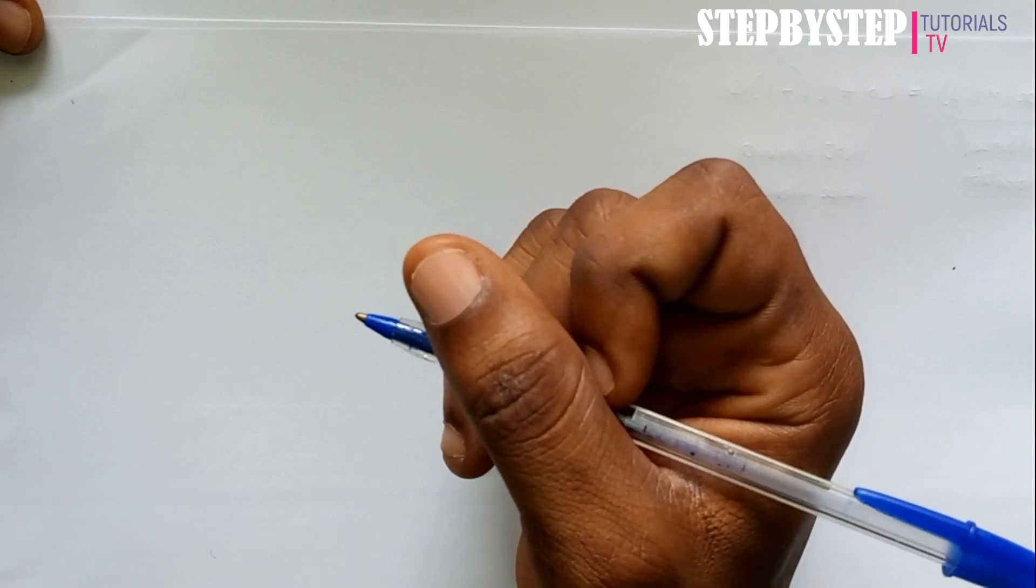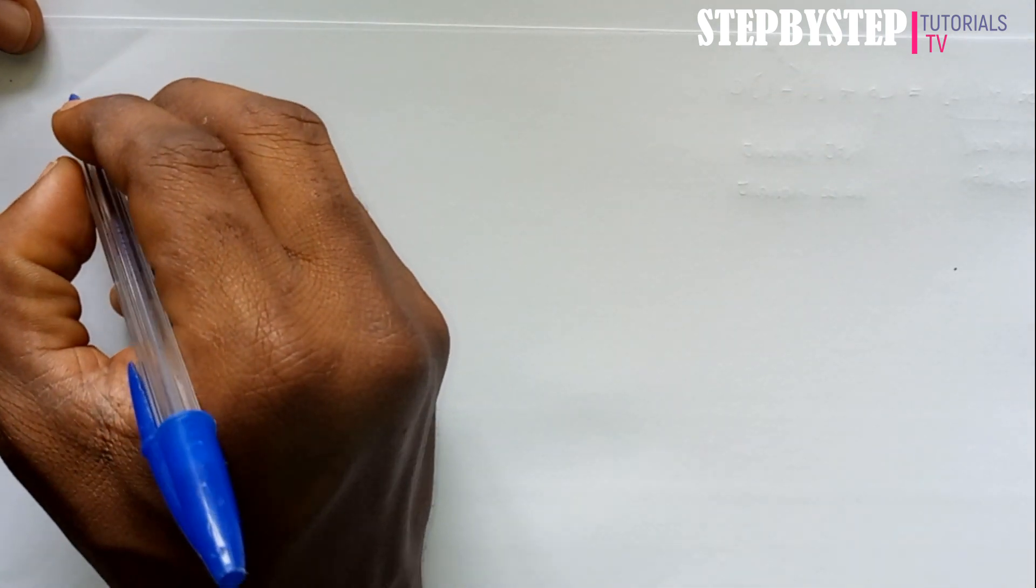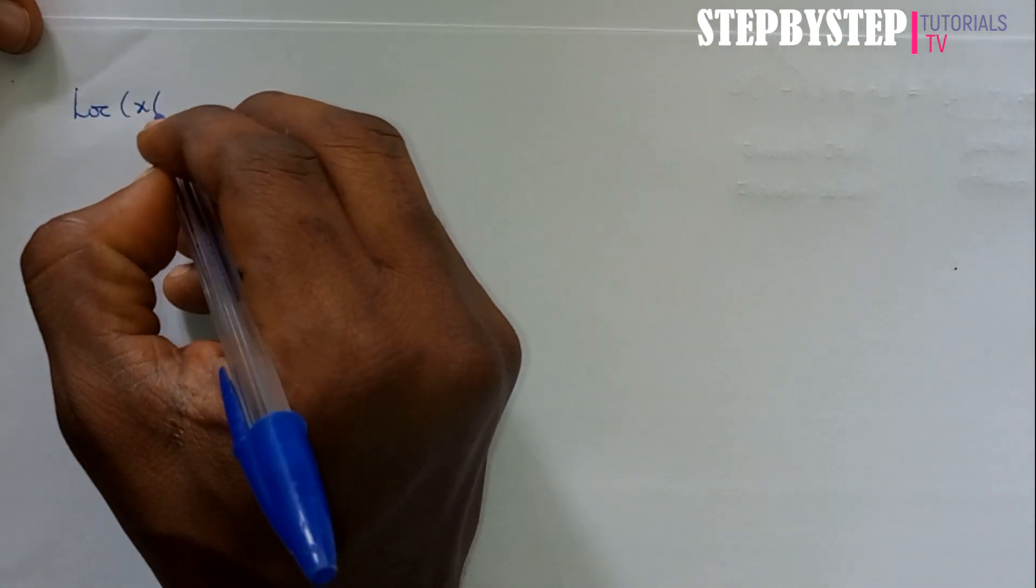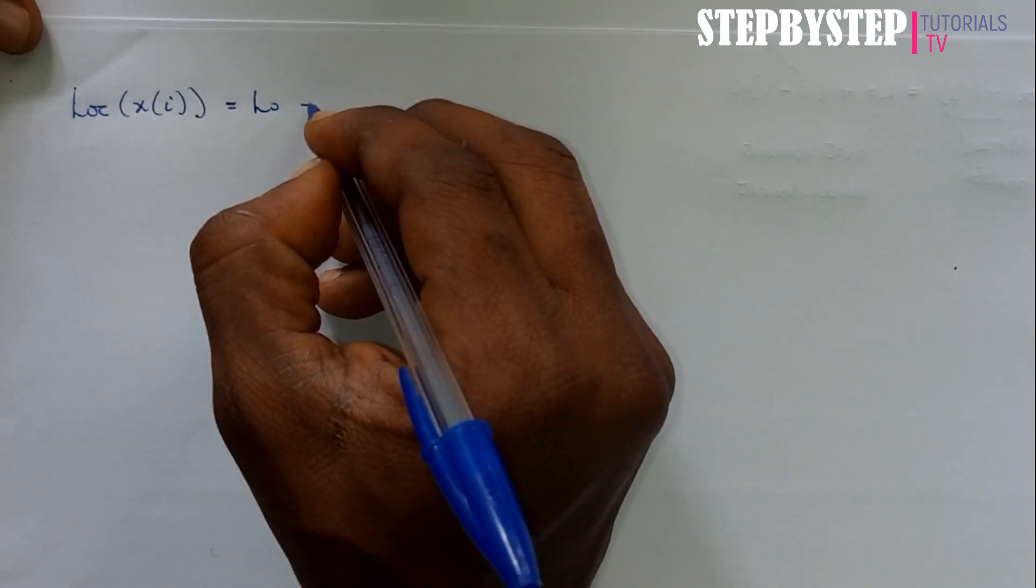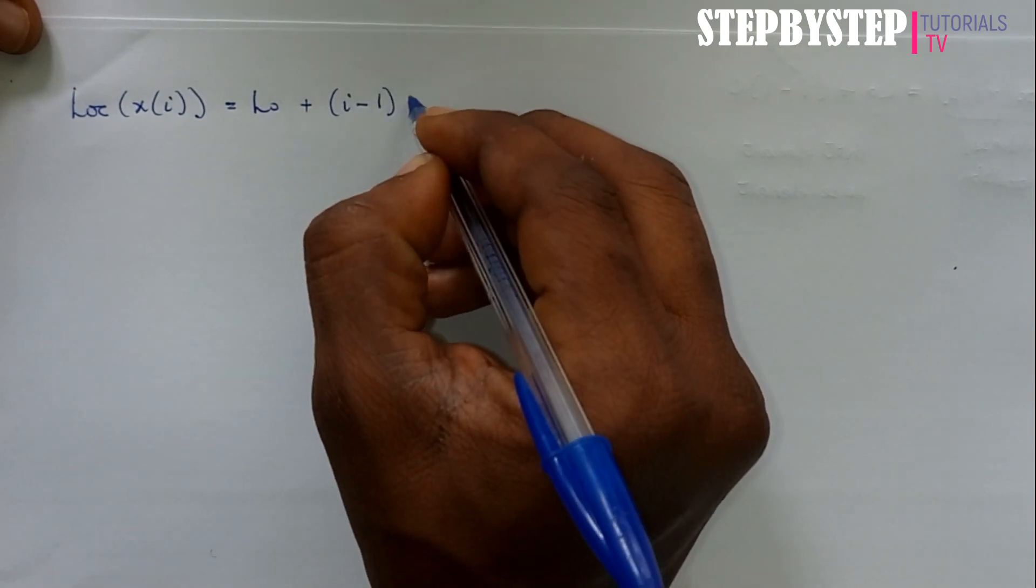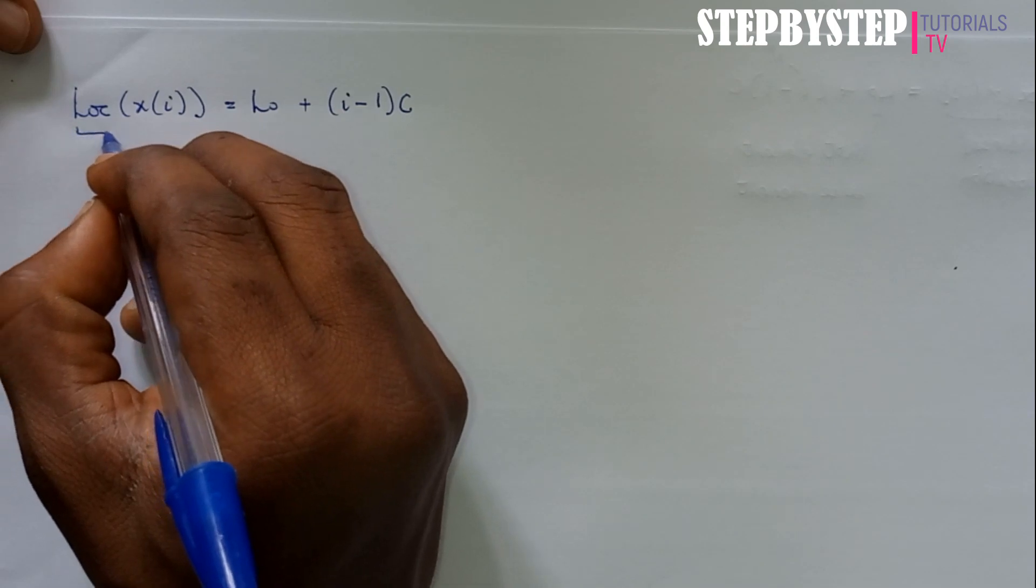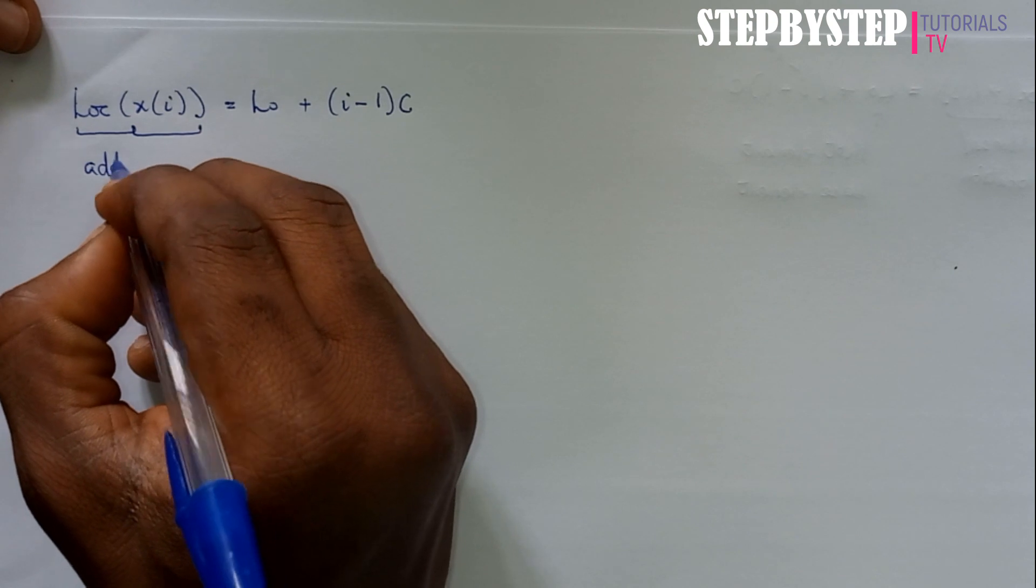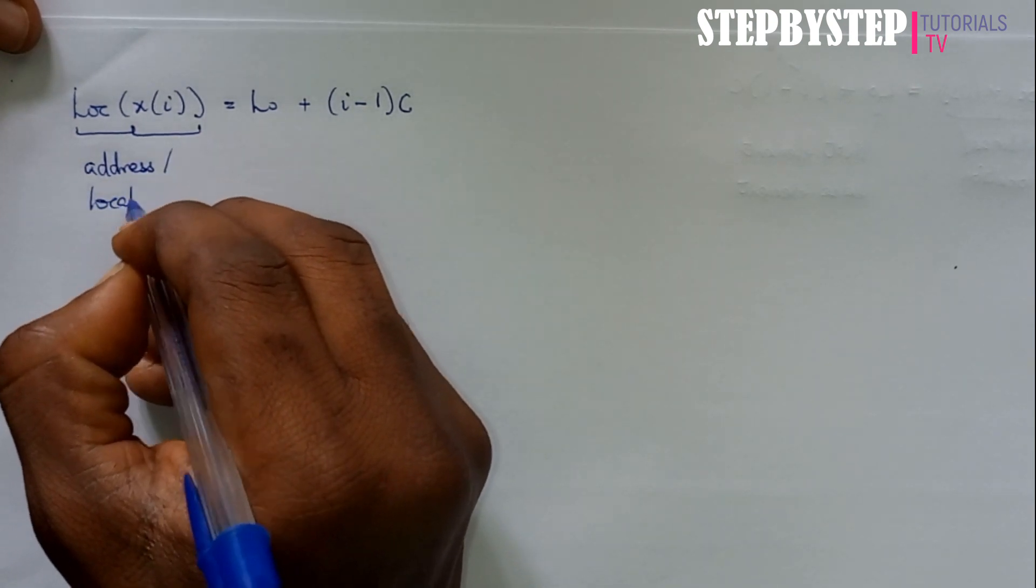To be able to calculate or find the address or location of a particular item, the general formula is given by LOC = LO + (I - 1) × C, where the parameter here represents the address or the location.